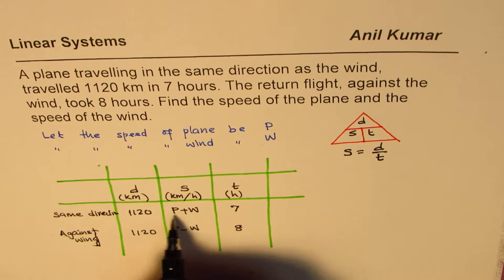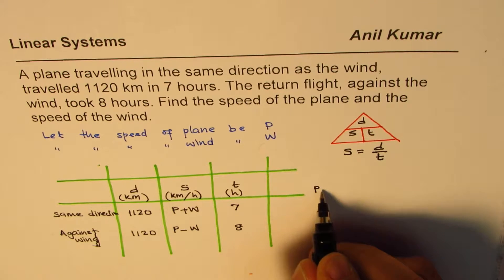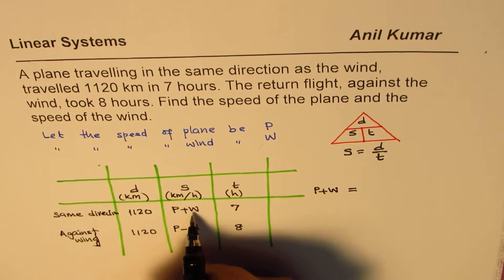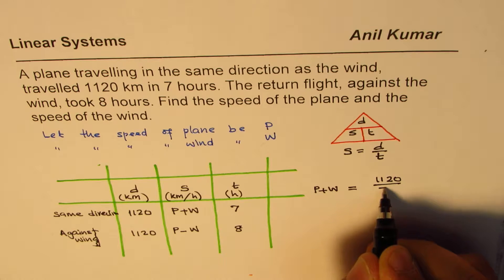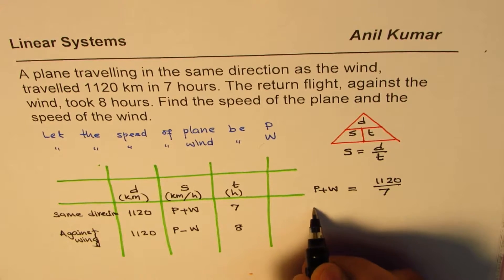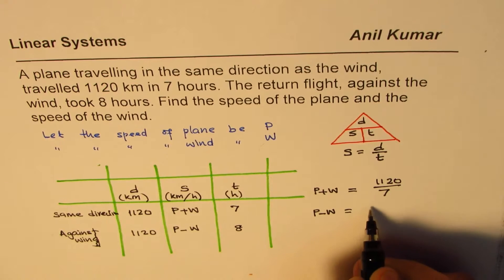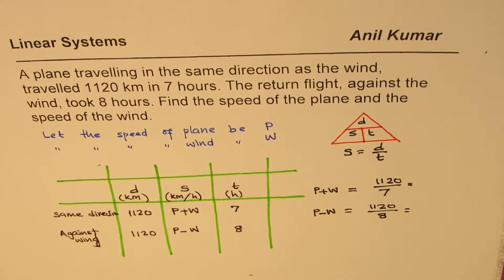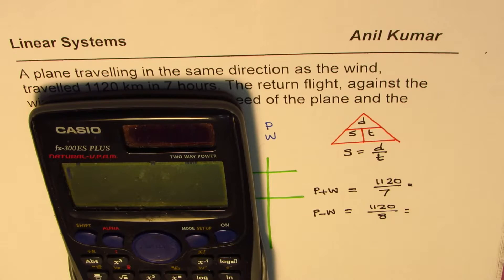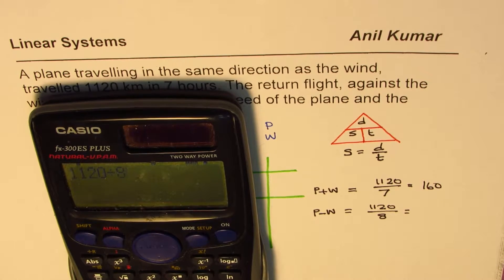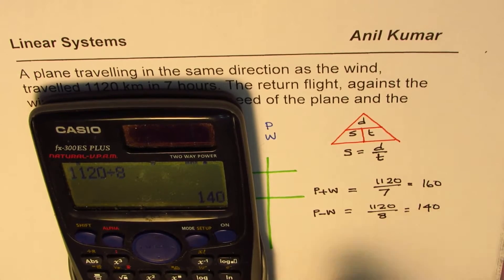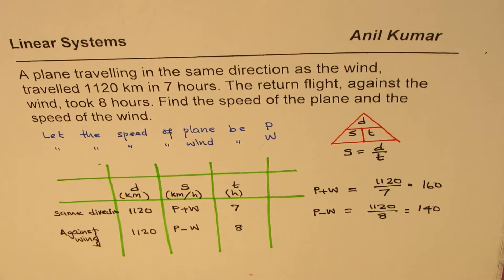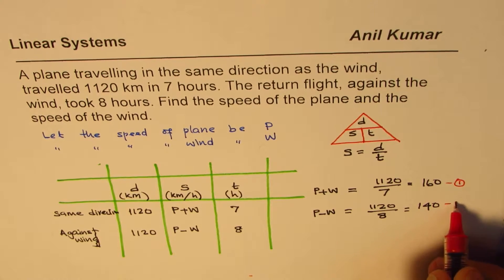So this first equation gives us P plus W equals to distance 1120 divided by 7. The second equation gives us P minus W equals to 1120 divided by 8. So we get two different equations. We can use the calculator and see what this is equal to. 1120 divided by 7 is equal to 160. And 1120 divided by 8 is equal to 140. So we can number these equations as equation 1 and equation 2.